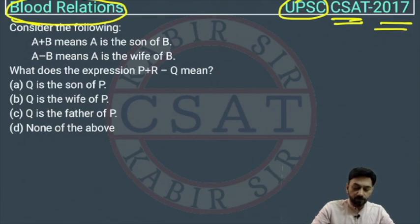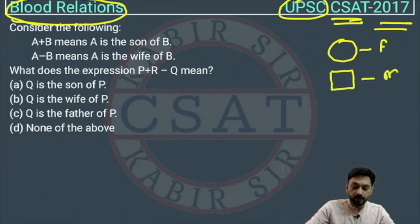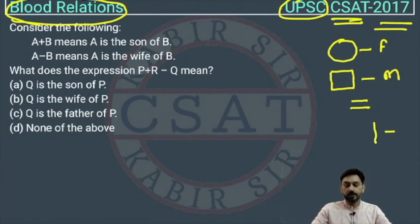Whenever we are doing blood relation questions, you should remember that whenever we draw a circle, it means we are representing female, and for male we will make a square or rectangle. If they are married, we will draw an equal sign. This vertical sign will represent the generation, meaning son or daughter.